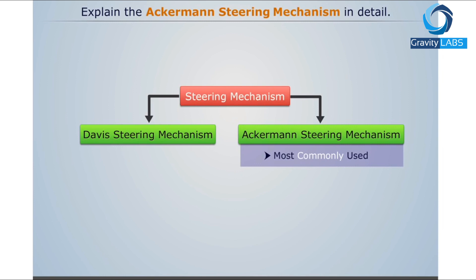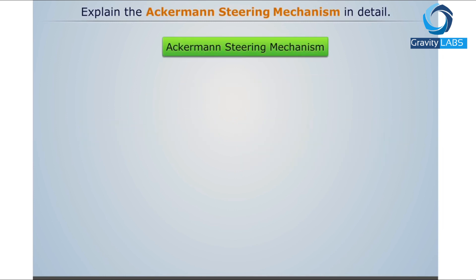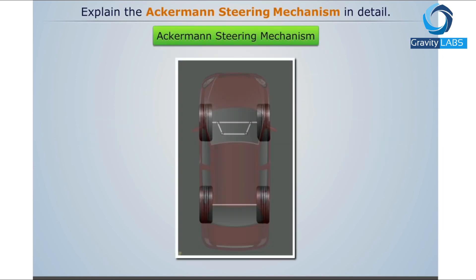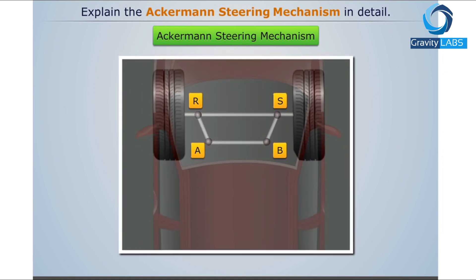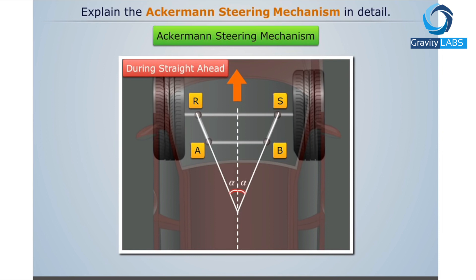Now let us discuss Ackerman steering in brief. A typical Ackerman steering can be shown as here — the links RA and SB are attached to the stub axles. These links are connected to each other through a track rod AB. During the straight ahead position, these links make angle alpha with the center line of the car.